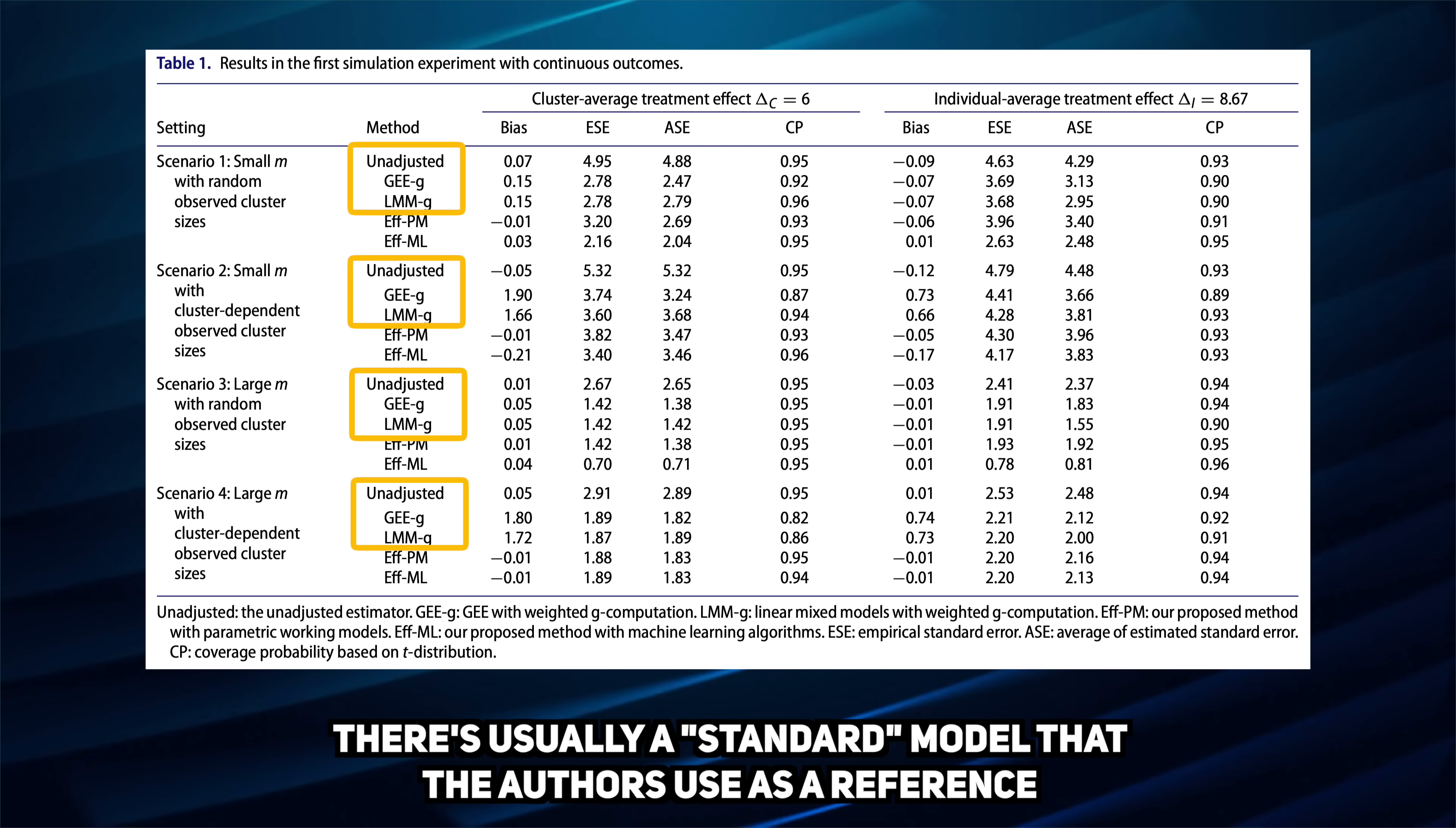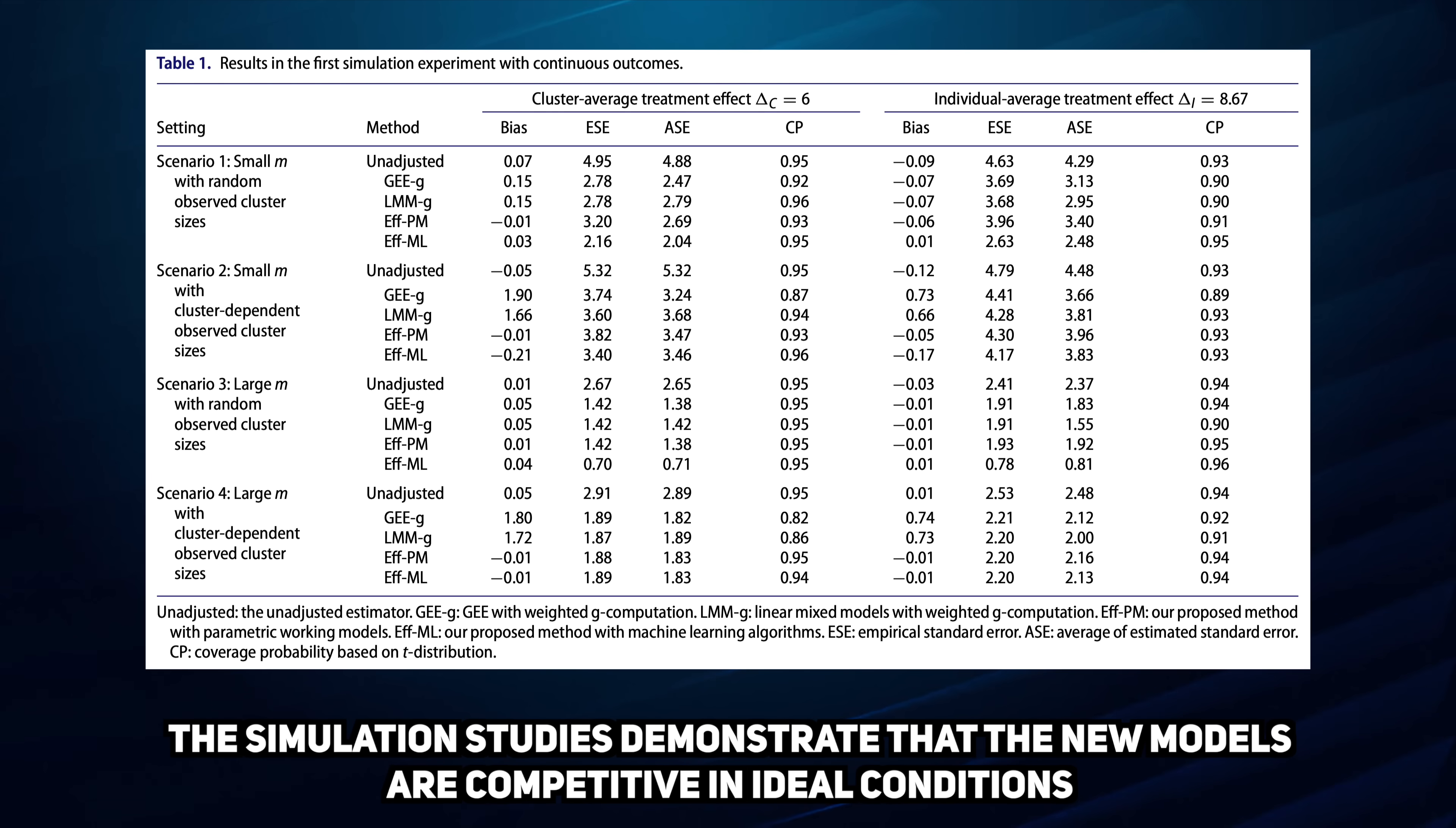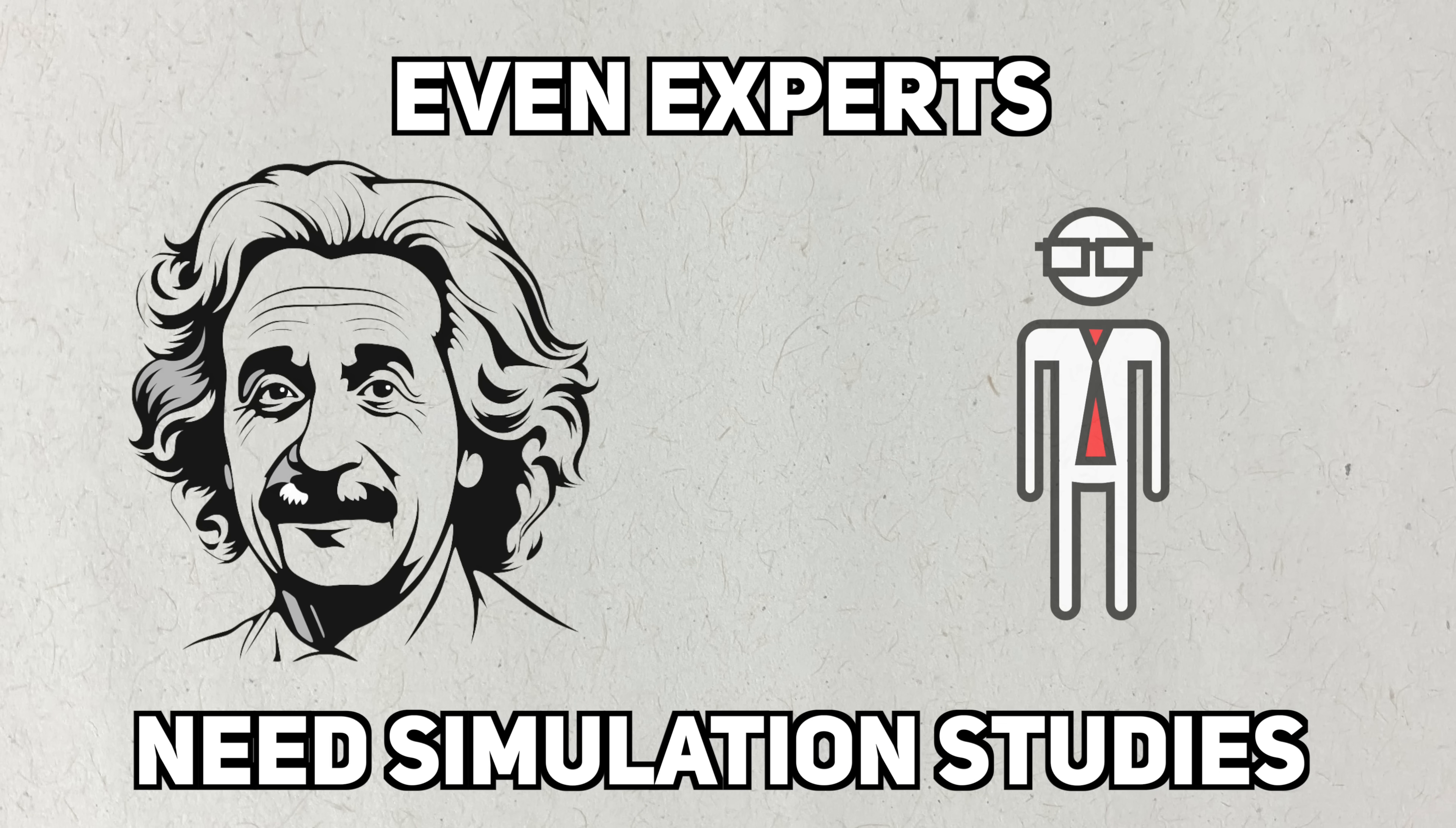These standard models are being compared against two new models that the authors have created. We can see that the proposed models have smaller estimation bias than these two standard models, and they have smaller average standard deviation than the unadjusted model. Both these results tell us that the new models perform better than the current standards, in ideal conditions, and should be considered for real world analyses. As you can see, even experts need simulation studies to push the boundaries of statistics.